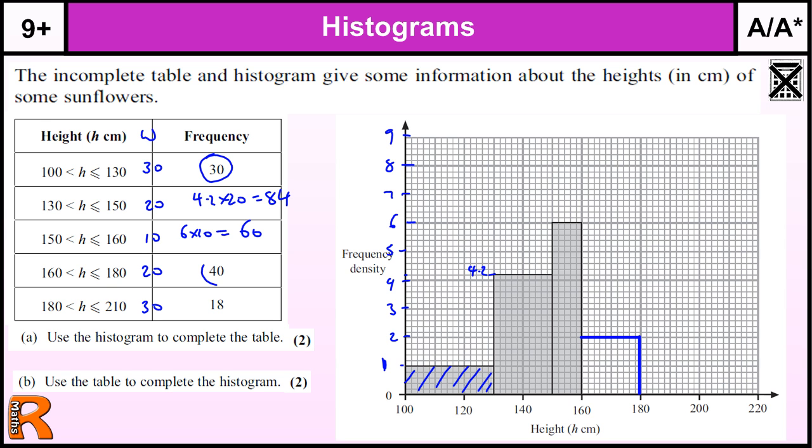And this one, we want a frequency of 18, and it's 30 wide. So we need to figure out what we times by 30 to make 18. Now that's quite tricky. But if I was trying to work out what I times 3 by to make 18, well 3 times 6 is 18. So if I want to work out what 30 is, I need to divide this by 10, so I need to make it 0.6. So 30 times 0.6 is 18. So this is going to be 0.6 high.